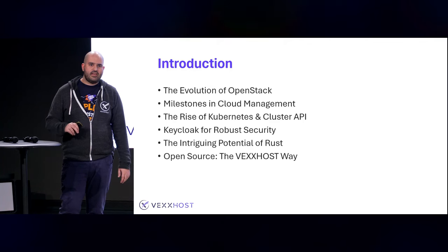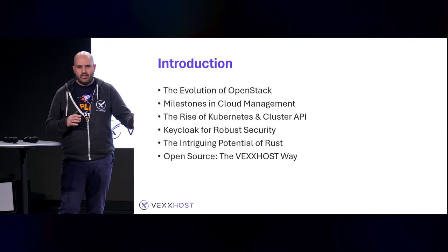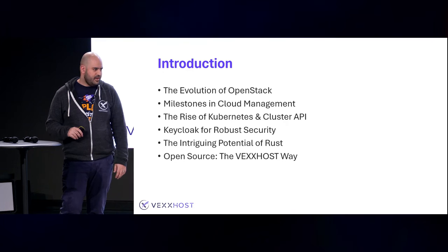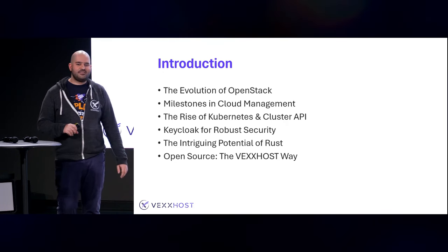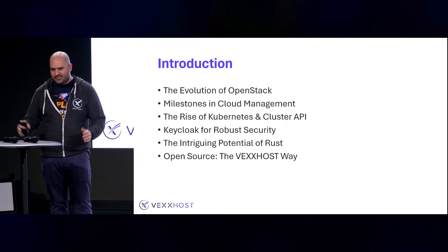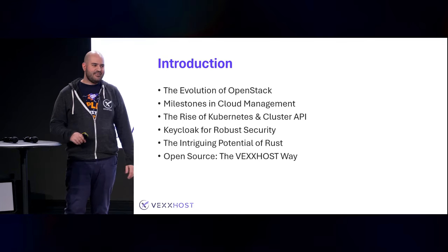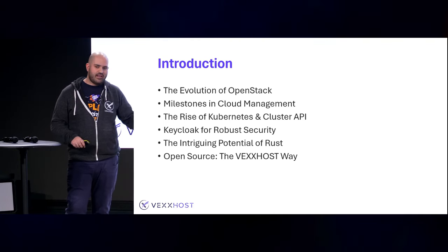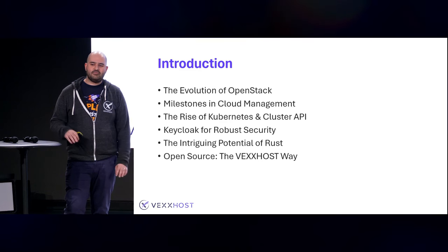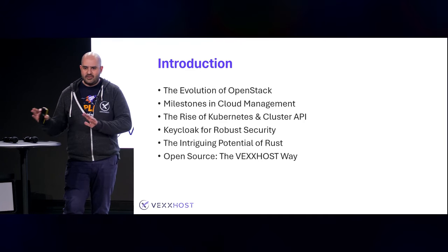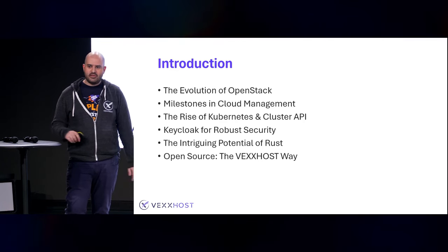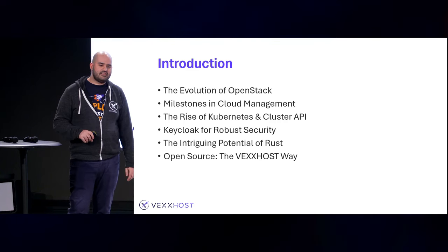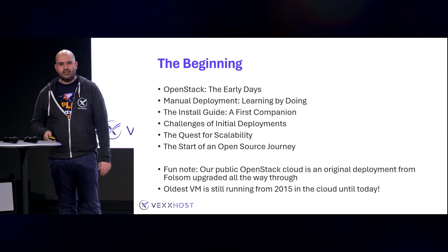After that, I'll cover how we started implementing Cluster API for Kubernetes. I'm glad we had that earlier talk introducing Cluster API, so I don't have to explain what it is — everybody knows what it is. We'll also talk a little bit about KeyCloak, some thoughts around adding Rust, which I know some people will get excited to hear, and then how we've open sourced all of it.